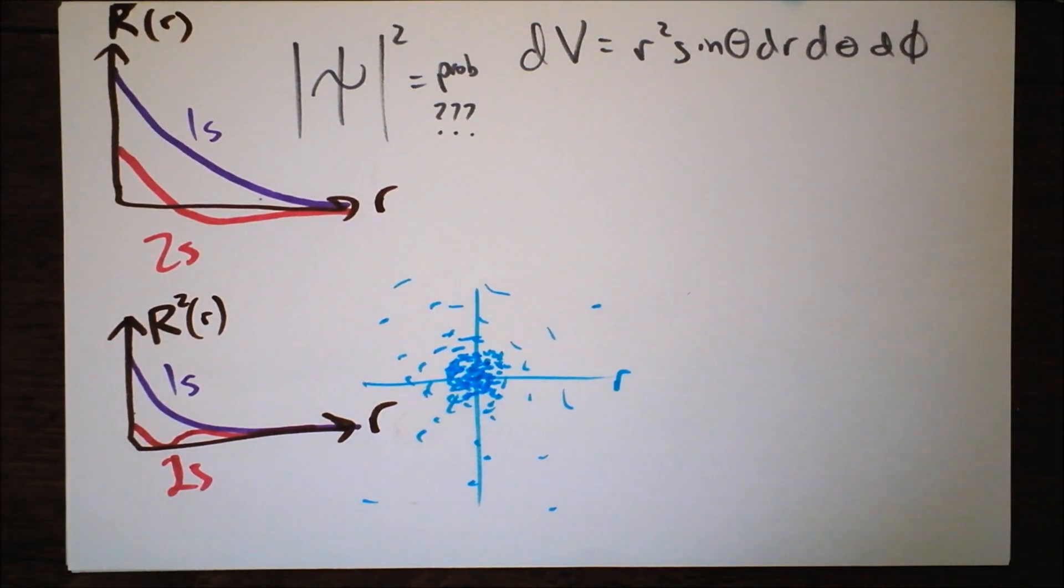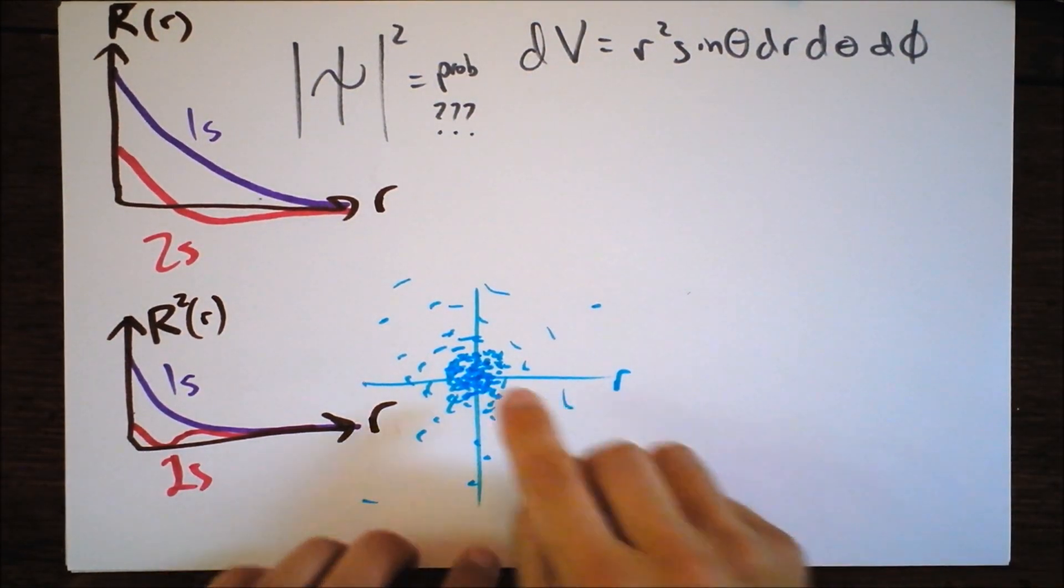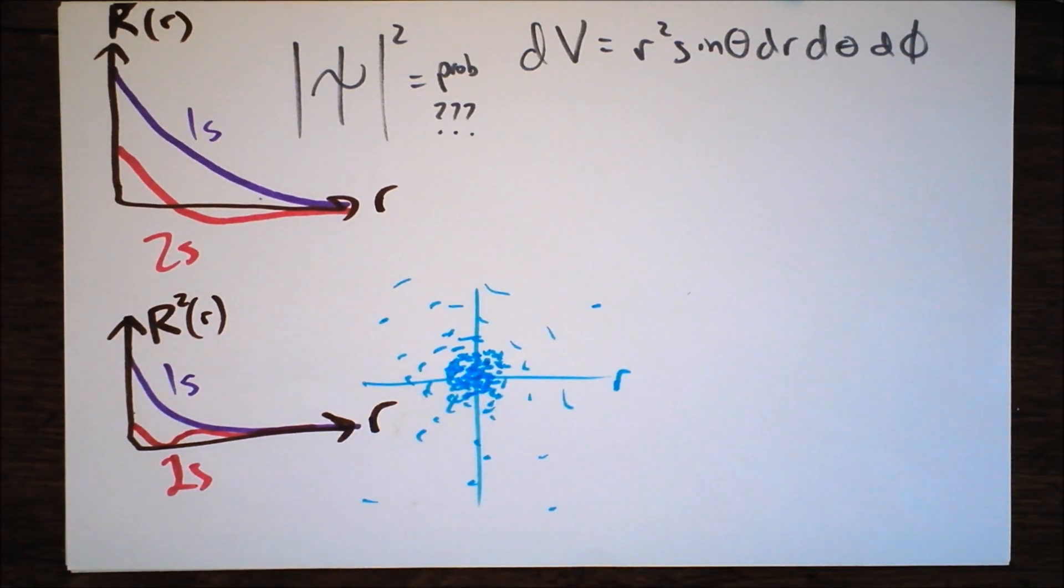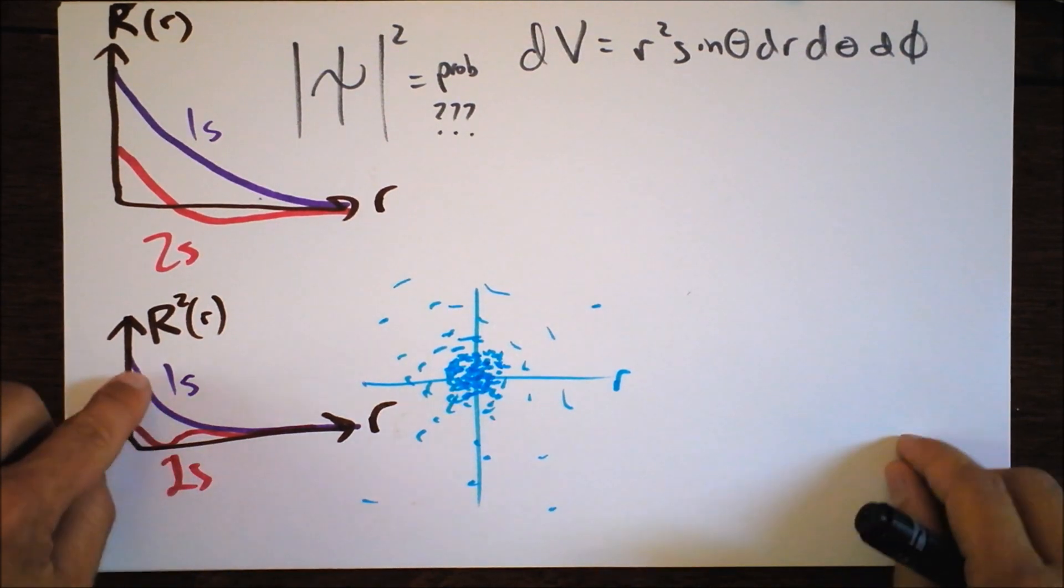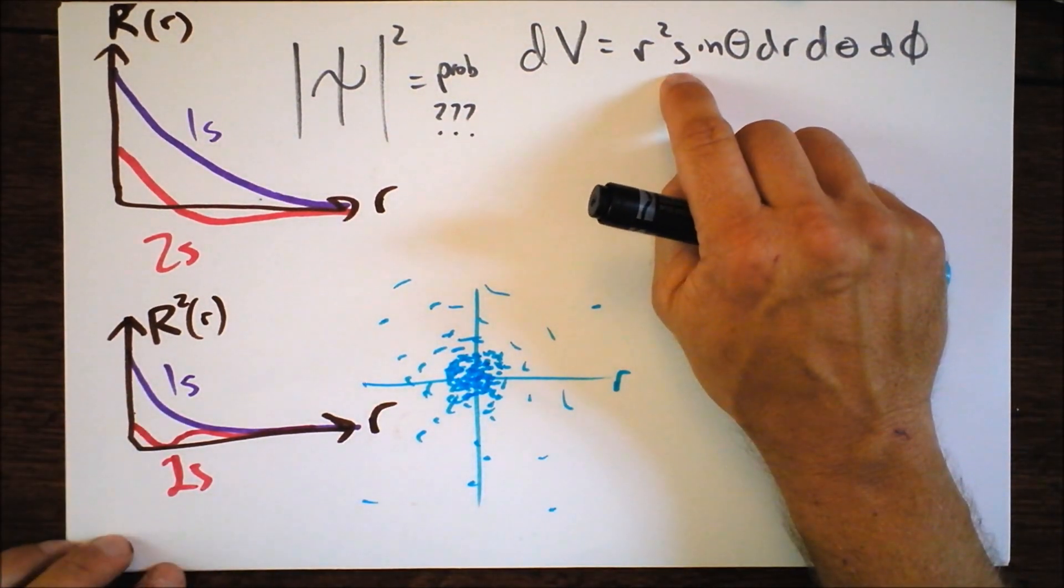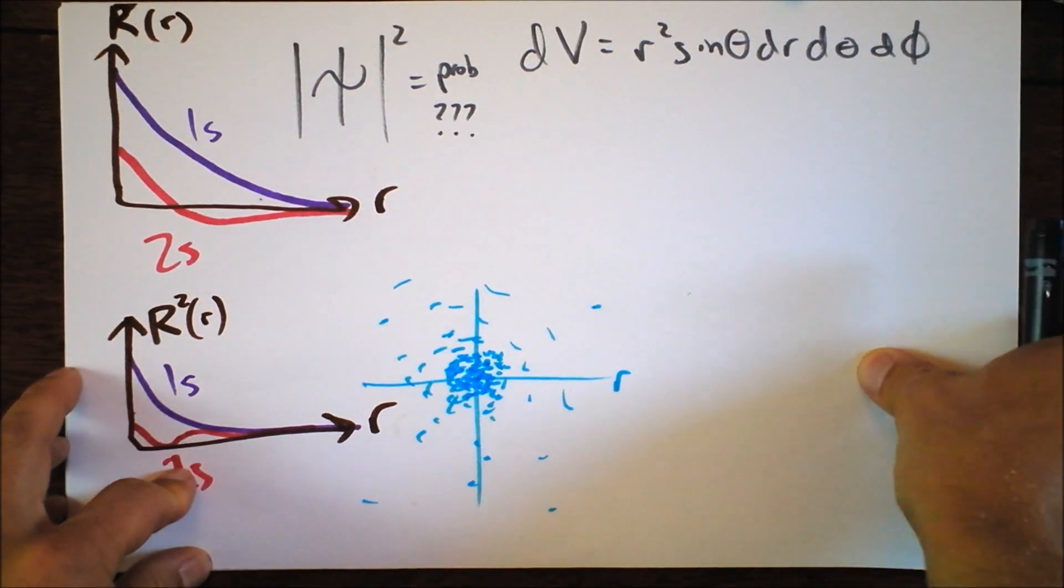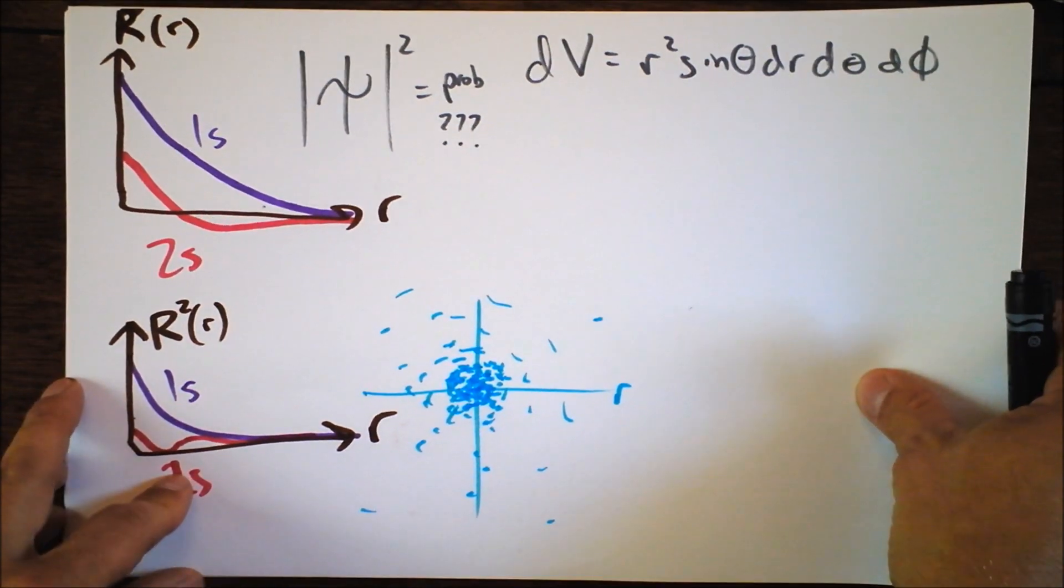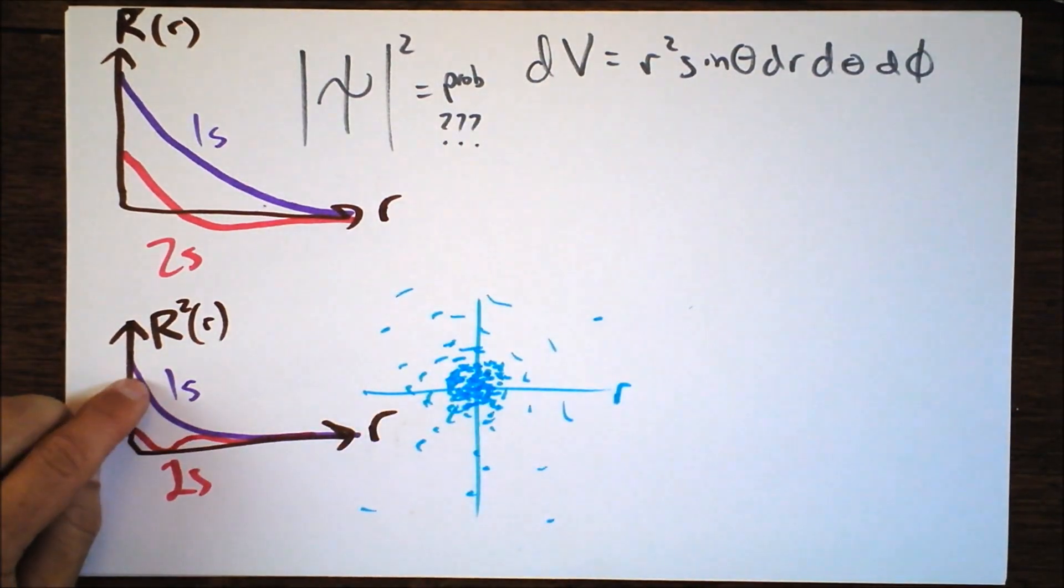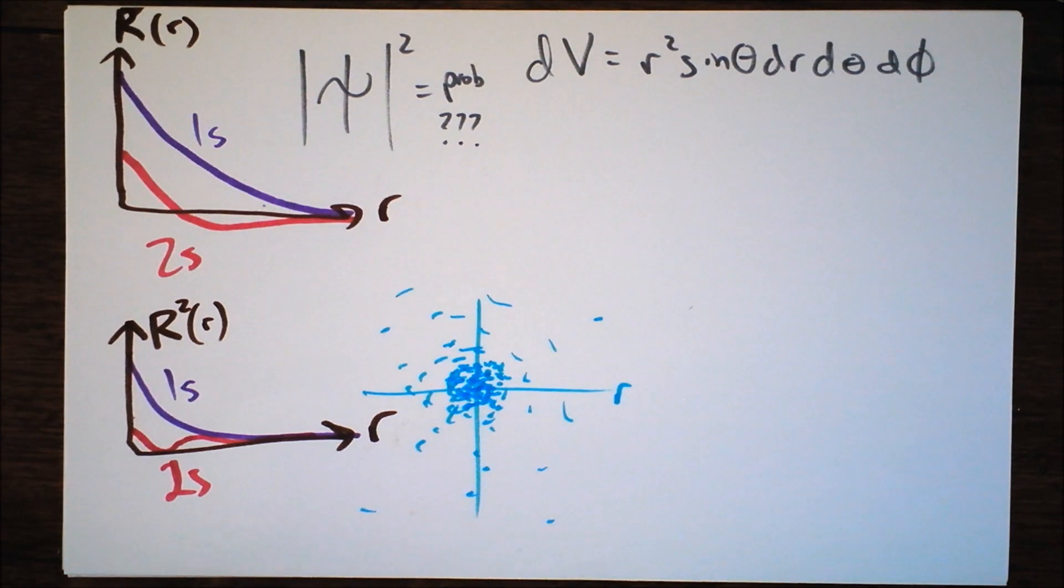However, that ends up not being the case because of the fact that there's just so little volume at the origin that it becomes vanishingly likely to find the particle at the origin. So what I mean is if you multiply this distribution function by the differential volume, then you get this function to look completely different.